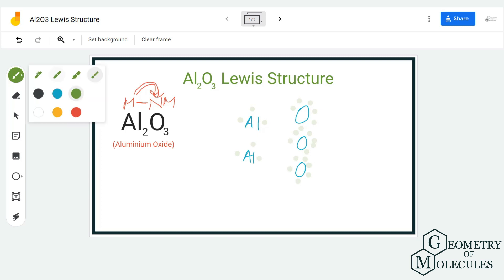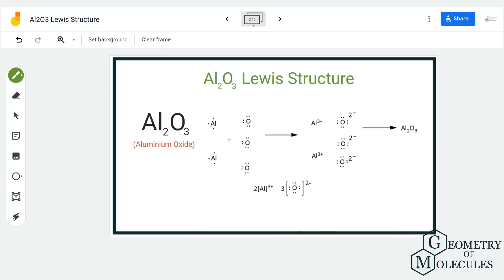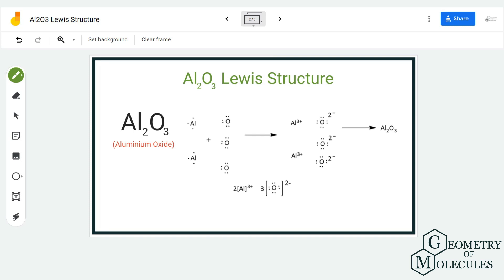So two over here, two over here, and two over here. Doing this, we complete the octets for oxygen atom, and now aluminum does not have any electrons because it has transferred all of its electrons to the oxygen atom.